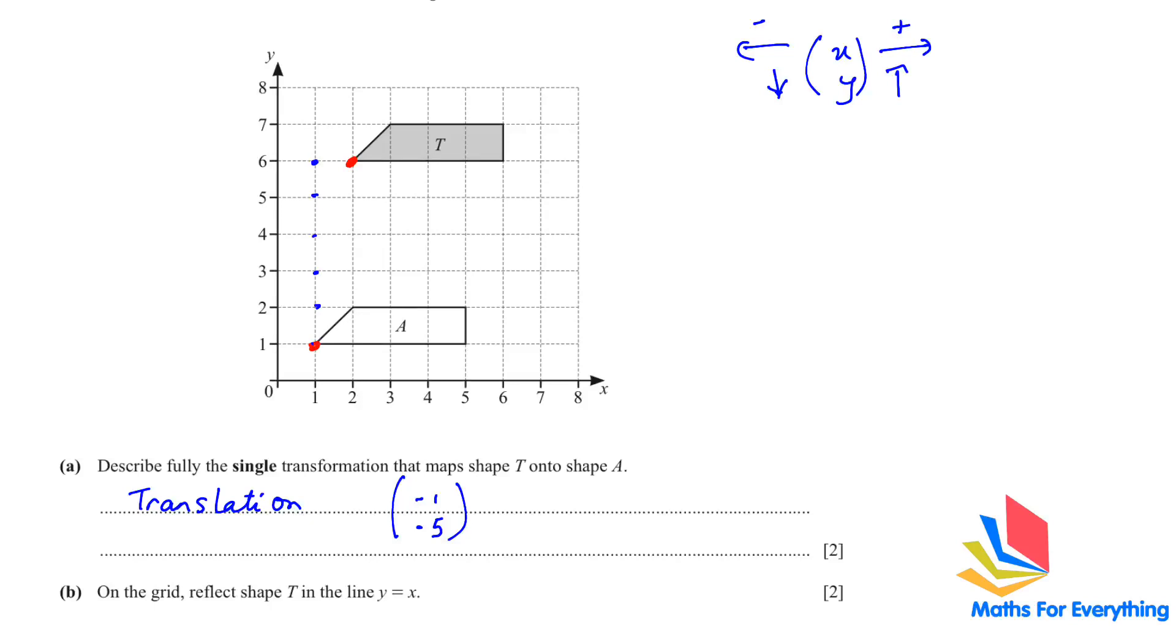Next one. On the grid reflect shape T in the line Y is equal to X. To draw the line Y is equal to X. What does that tell us? Y is equal to X means when Y is 1, X is 1. When Y is 2, X is 2. So, plot a few points and draw the line.